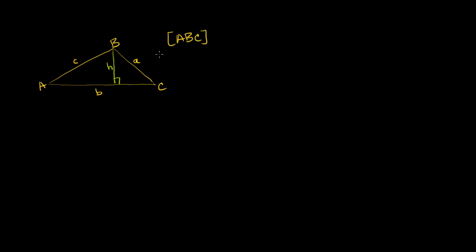Now we know how to calculate the area of this triangle if we know its height. So we can drop an altitude right here. And if this altitude has length h, we know that the area of triangle ABC — writing ABC with brackets around it means the area of triangle ABC — is equal to one half times the base, which is lowercase b, times the height.